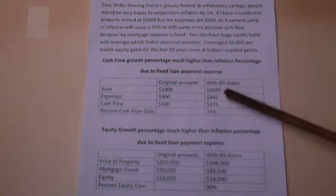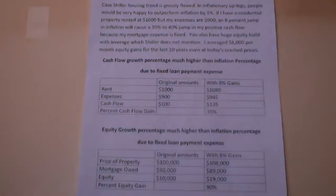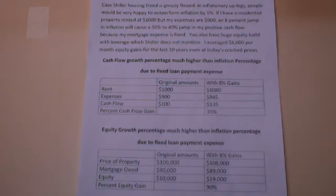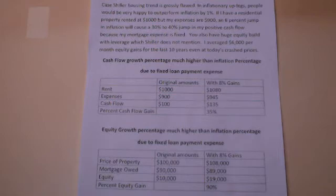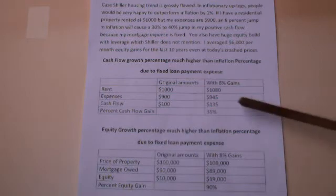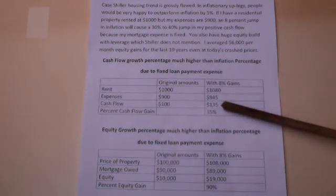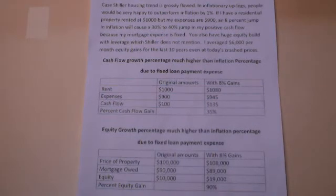If the market goes up by 8%, your expenses will not go up by 8%, because you have a fixed loan on residential property. Even with variable loans, most of them have a 5% cap — so if you get a variable loan, make sure it has a 5% cap. That's very normal with residential properties, and even with income properties. So your cash flow will actually go up to $135 a month — that's a 35% gain in cash flow — and this will go on and on.